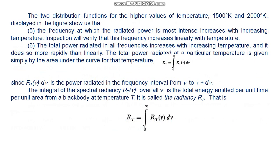The two distribution functions for the higher values of temperature — 1500 Kelvin and 2000 Kelvin — displayed in the figure show us that the frequency at which the radiated power is most intense increases with increasing temperature. Inspection will verify that this frequency increases linearly with temperature. The total power radiated at all frequencies increases with increasing temperature, but it does so more rapidly than linearly.